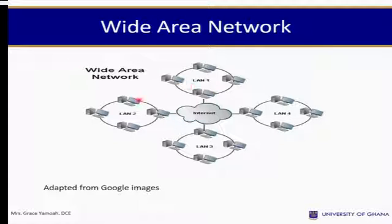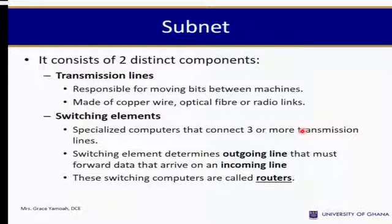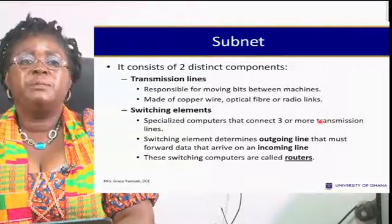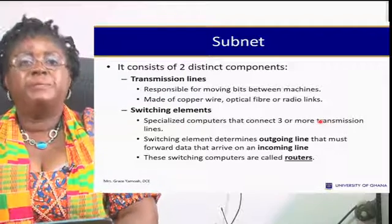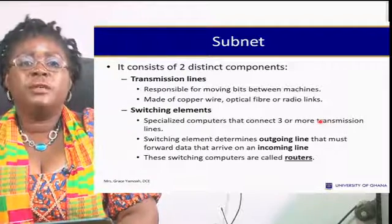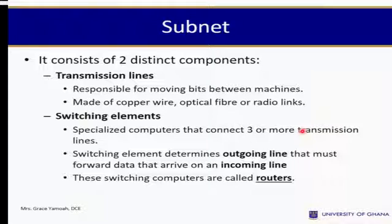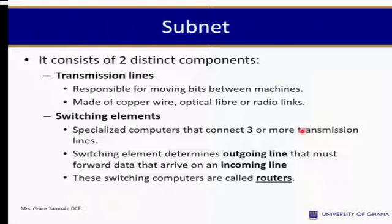Subnets consist of two distinct components: transmission lines and switching elements. Transmission lines are responsible for moving bits between machines and are made of copper wire, optical fiber, or radio links. Switching elements are specialized computers that connect three or more transmission lines together and determine the outgoing lines through which data arriving on an incoming line must be forwarded. These switching computers are called routers.